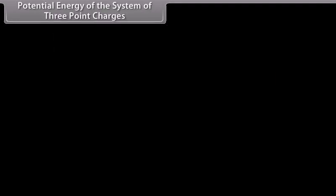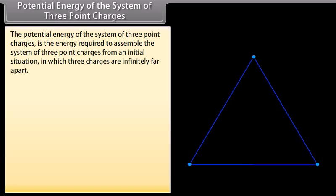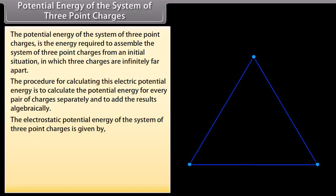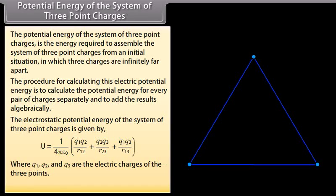Potential energy of the system of three point charges. The potential energy is the energy required to assemble three point charges from an initial situation where they are infinitely far apart. It is calculated by finding the potential energy for every pair of charges separately and adding the results algebraically. The electrostatic potential energy is U equals 1 over 4π ε₀ multiplied by (Q1·Q2 over R12 plus Q2·Q3 over R23 plus Q1·Q3 over R13), where R12, R13, and R23 are the respective separation distances.